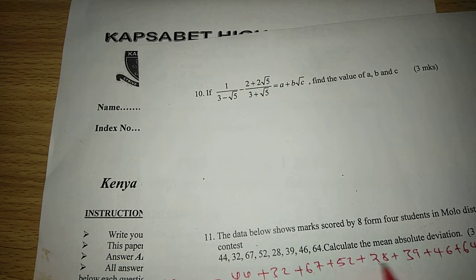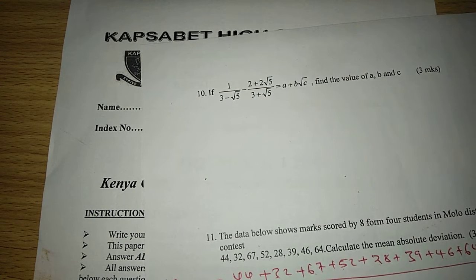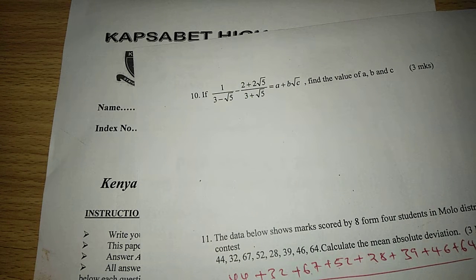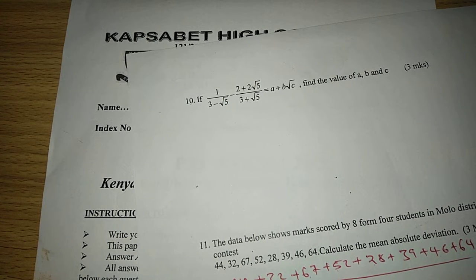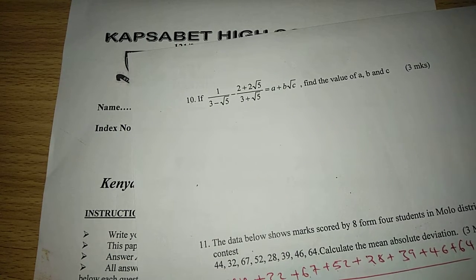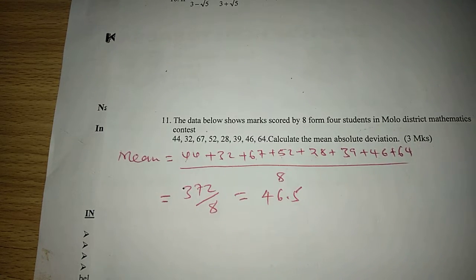One, two, three, four, five, six, seven, eight. We divide with eight students. Therefore, the mean will be when we add 44 plus 32 plus 67 plus 52 plus 28 plus 39 plus 46 plus 64. This gives us 372 divided by eight students. So the mean score is 46.5.